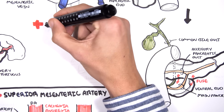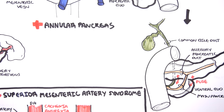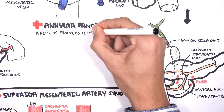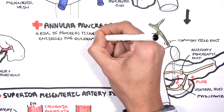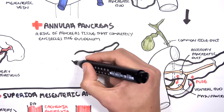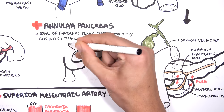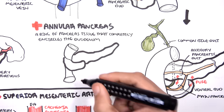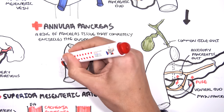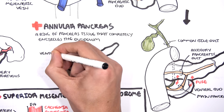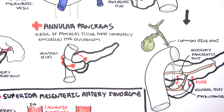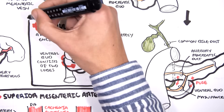A clinical condition called annular pancreas is a developmental anomaly in which a ring of pancreatic tissue completely encircles the duodenum. This occurs when the ventral pancreatic bud consists of two lobes that rotate to either side of the dorsal pancreatic bud, encircling the duodenum. Annular pancreas can cause pancreatitis and symptoms of partial bowel obstruction, and surgical correction is often required.